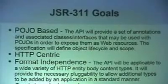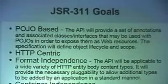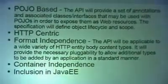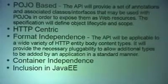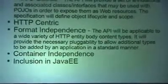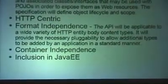JSR-311 has goals. The four of them are that it's POJO-based, it's HTTP-centric, it's format-independent, which means that you can send an HTML document as well as an XML document, a JSON document, that's JavaScript Object Notation. Container independence, it'll run in a web container, it'll run on its own as a standalone application, it'll run in a JEE server. And the inclusion in Java EE is the goal for it.